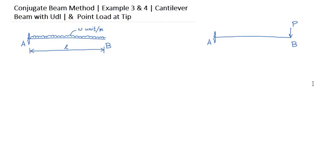So let's draw the conjugate beam of this cantilever beam. As per the theory, if there is a fixed support at the real beam, it will be converted to free support, and the free support will be fixed.